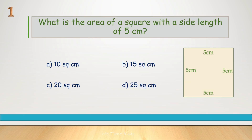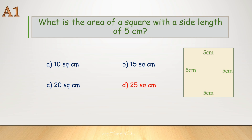What is the area of a square with a side length of 5 centimeters? Correct answer is D, 25 square centimeters.